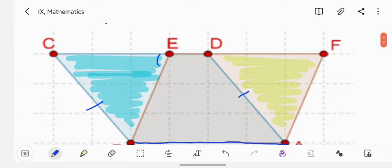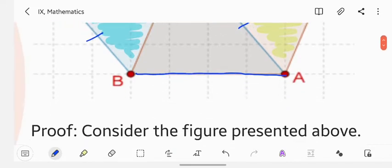So angle BEC, this angle equals to this angle, and this angle equals to this angle. BEC equals to AFD.